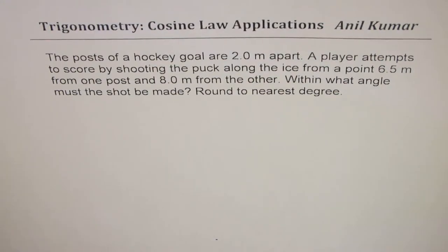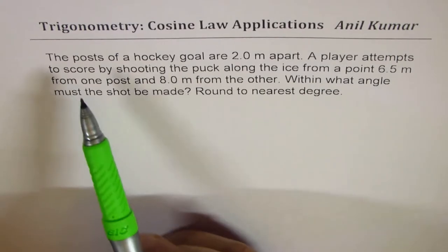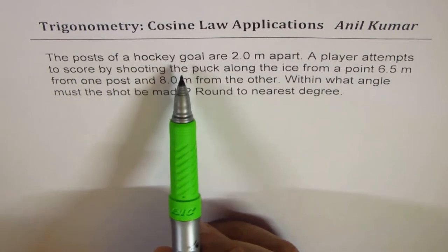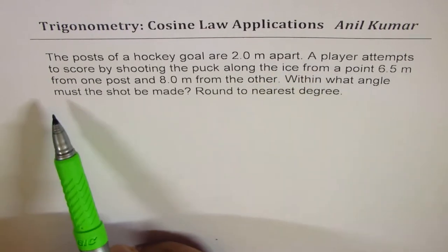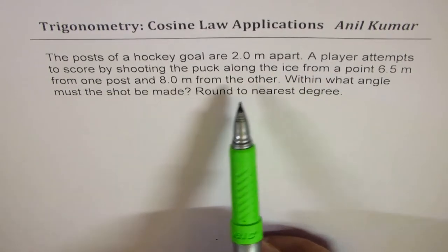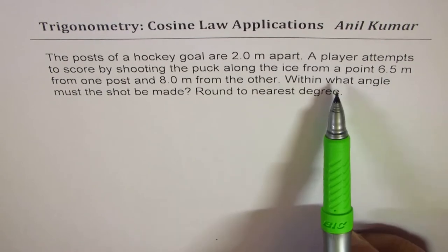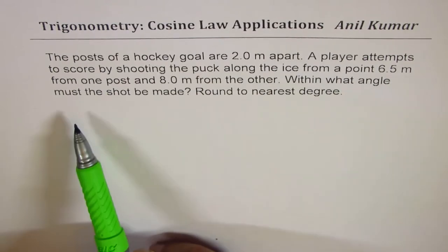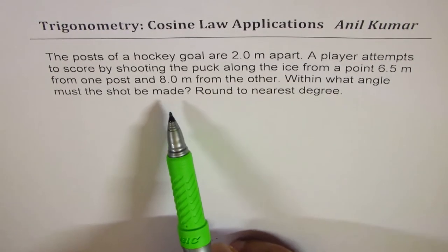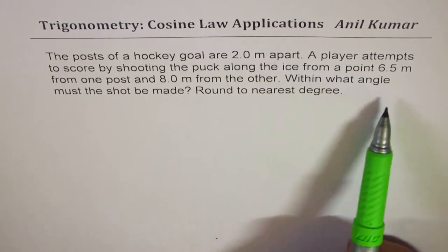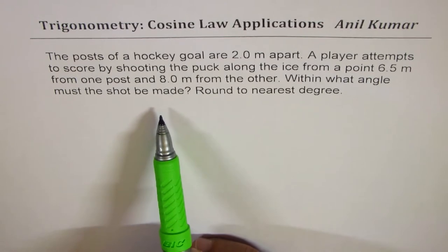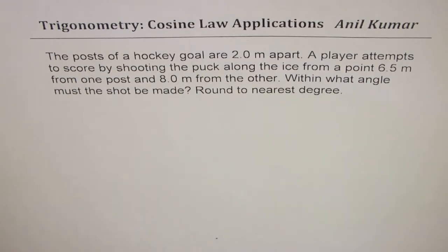I am Anil Kumar sharing with you a test question on cosine law. The question here is: the posts of a hockey goal are 2 meters apart. A player attempts to score by shooting the puck along the ice from 6.5 meters from one post and 8.0 meters from the other. Within what angle must the shot be made, rounded to the nearest degree?